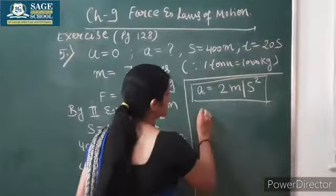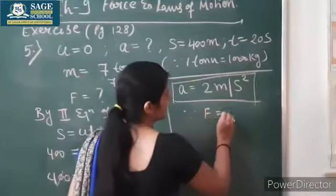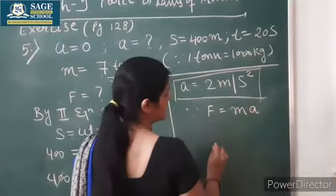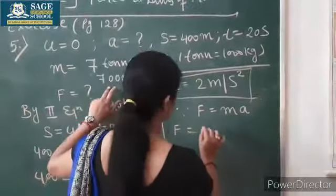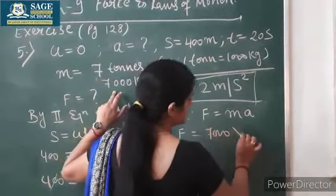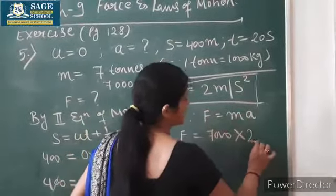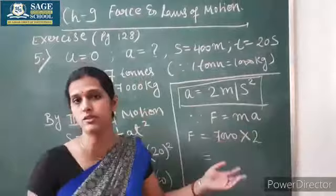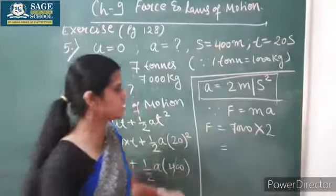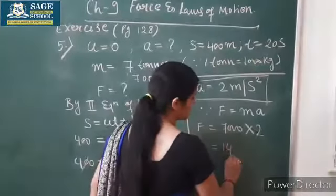Now let's calculate force. Since force equals mass into acceleration, substitute the value of mass. Mass is given as 7000 kilograms, 7000 into acceleration is given as 2 meters per second squared. We are in the same system, so there is no need to convert. Directly you can write, 7 into 2 equals 14,000.